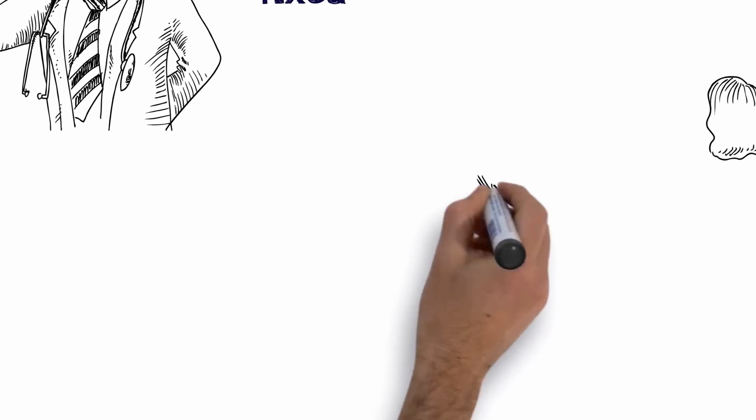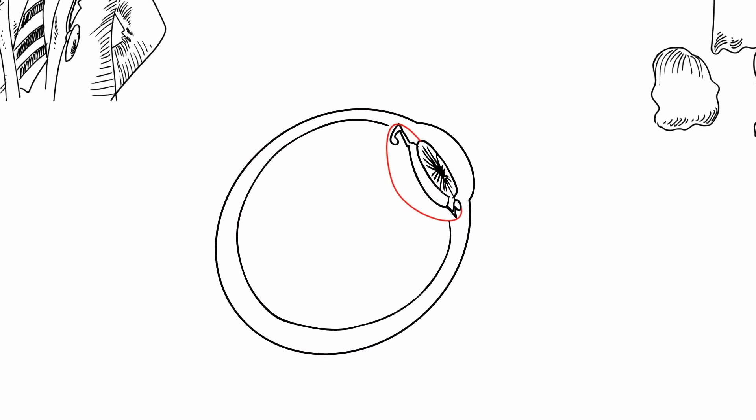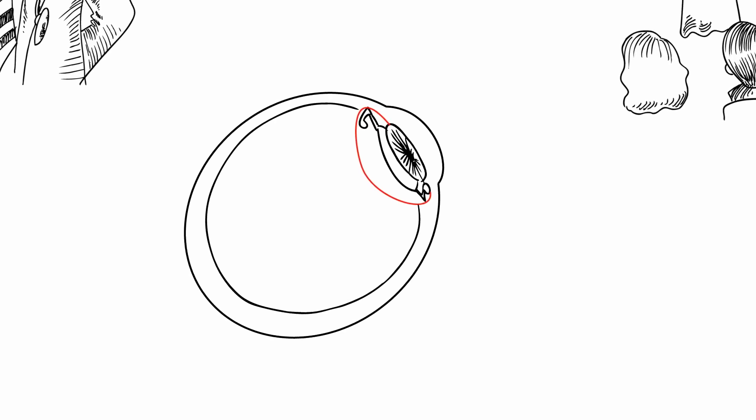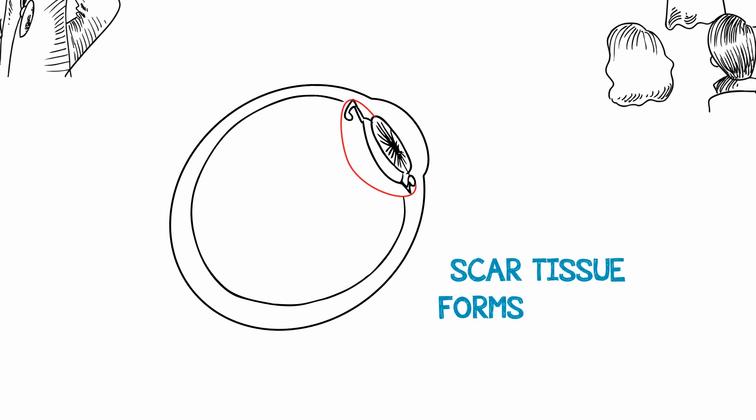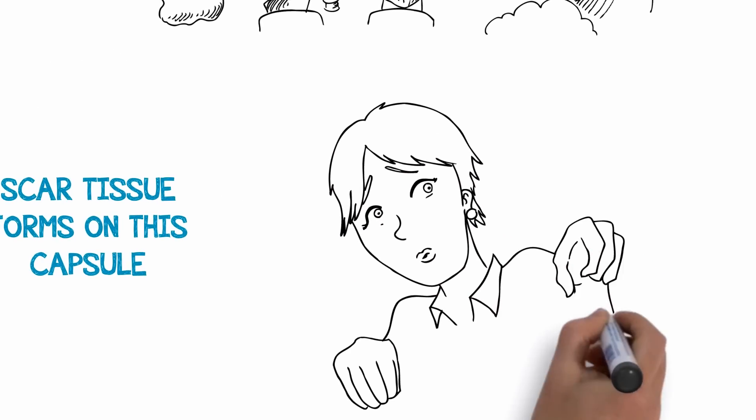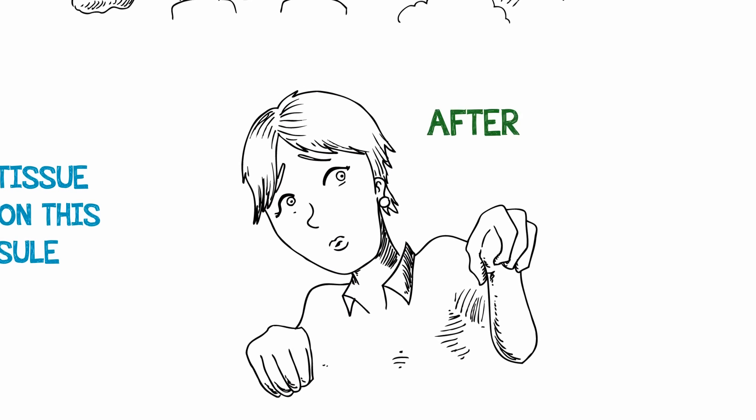When we put the new artificial lens implant in your eye, we use the capsule or the outer skin of the old lens to support the new lens and keep it in place. It's not uncommon for scar tissue to form on this capsule. This can make your vision cloudy and it may seem like your cataract has returned. This is why you may have heard this condition called an after cataract.